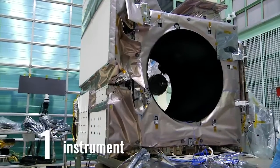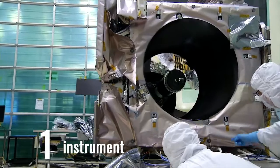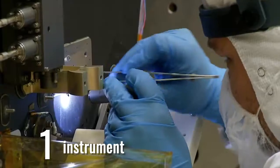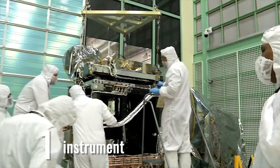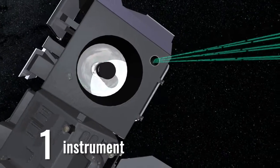Only one instrument, but it's a really good one. The Advanced Topographic Laser Altimeter System, or ATLAS, was built by hundreds of people at NASA's Goddard Space Flight Center to exacting requirements so that scientists, very soon, can measure minute changes in our planet's ice.